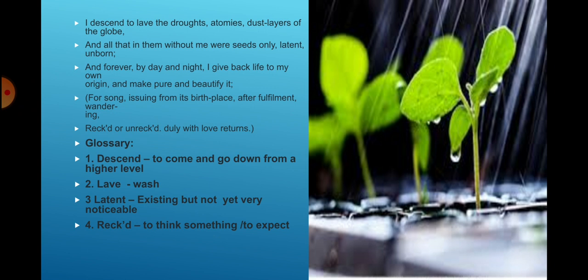In this stanza, the rain tells the poet that she comes down once again on the earth to complete its life cycle and help in creation of new cycle. Its downfall on earth showers her graciousness and benevolence. She helps in removing the problem of draughts and dust layers from the earth.